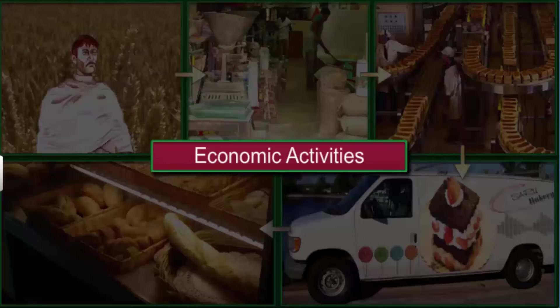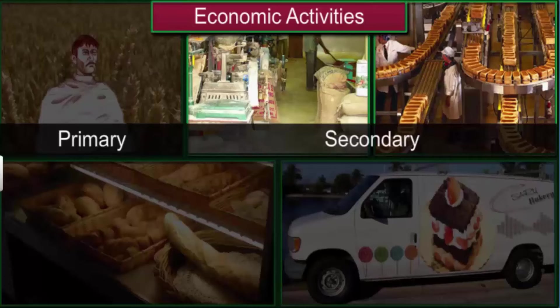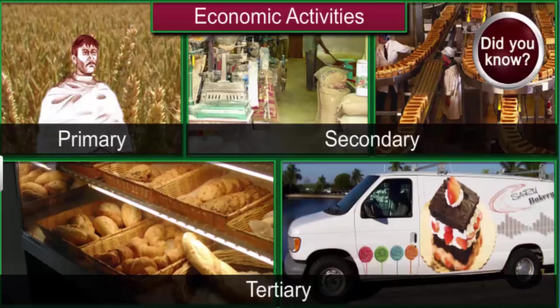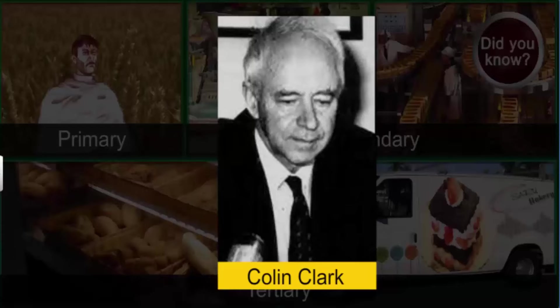Economic activities are classified into three different groups called the primary sector, the secondary sector, and the tertiary sector. The three sector hypothesis that divides economic activities into primary, secondary, and tertiary sectors was developed by Colin Clark, a British economist, and Jean Fourastié, a French economist.